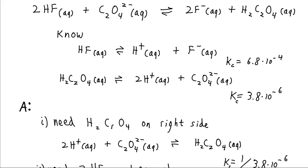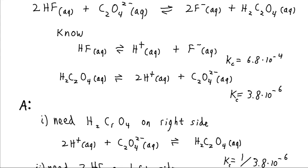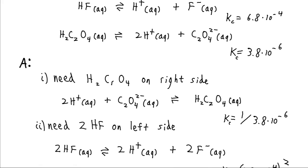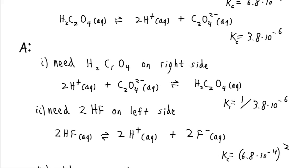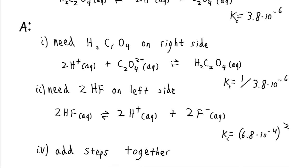We may also notice that we have 2HF on the left side here, but we only have 1HF in our tabulated equation. So we're going to need to double this whole equation here. And if we do that, our rule is that we're going to need to square the exponent, use a squared exponent here for this equilibrium constant.